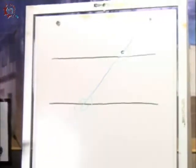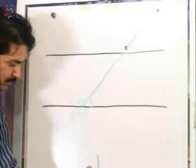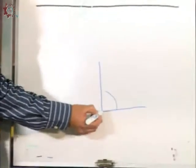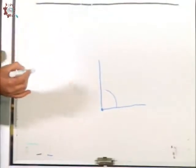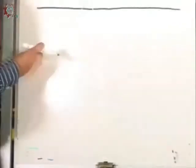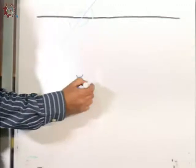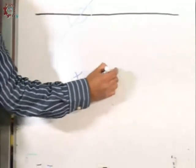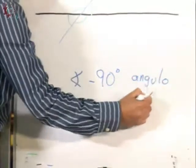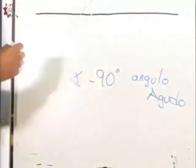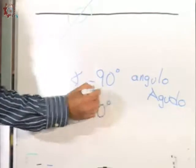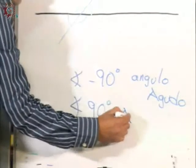Recordemos el concepto de un ángulo. Sabemos que un ángulo es la abertura que hay entre dos líneas con un mismo origen. Sabemos también que un ángulo menor de 90 grados le llamamos ángulo agudo.